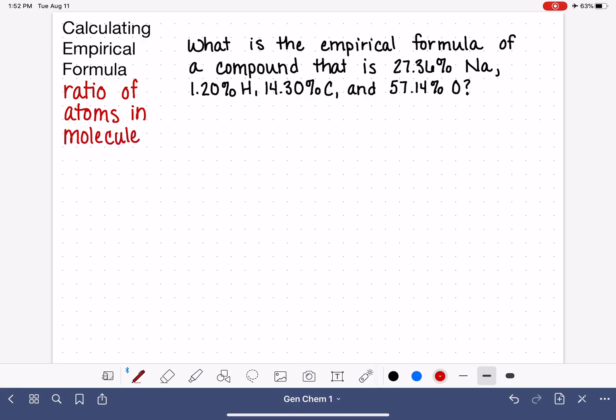The empirical formula is different from the molecular formula in that the molecular formula is the exact number of atoms in a molecule, whereas the empirical formula is just a ratio of the atoms in the molecule. In this video, I'm going to teach you how to calculate empirical formula from percent composition data.